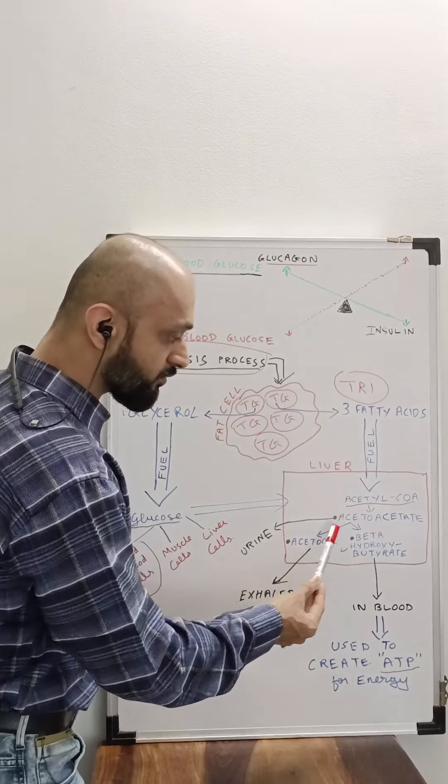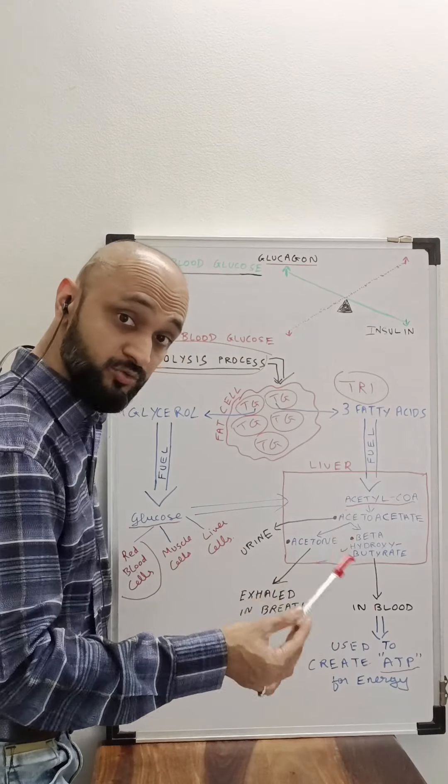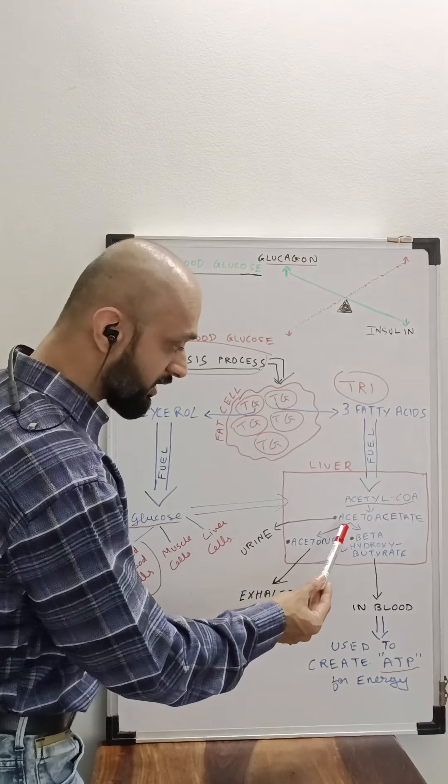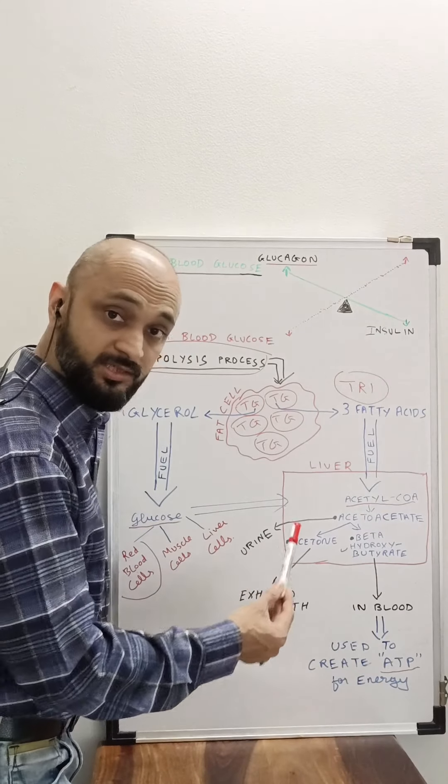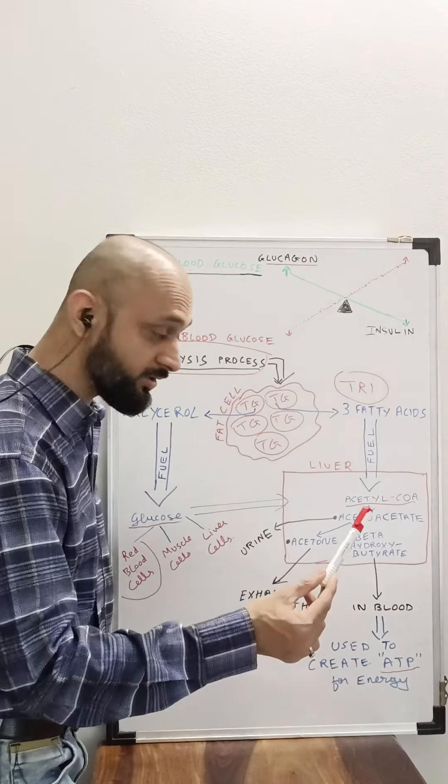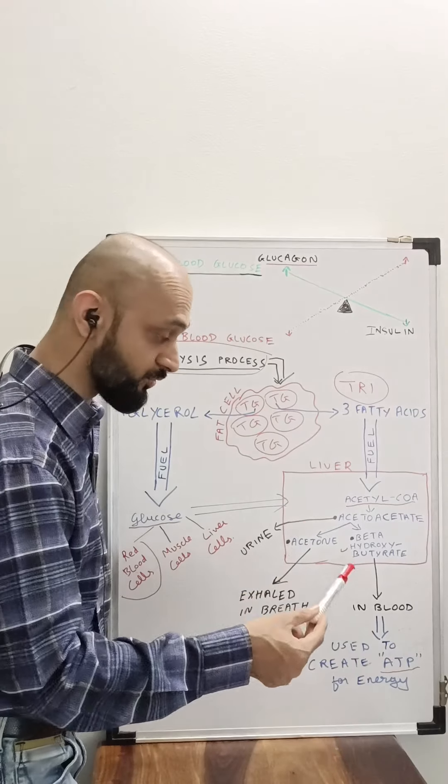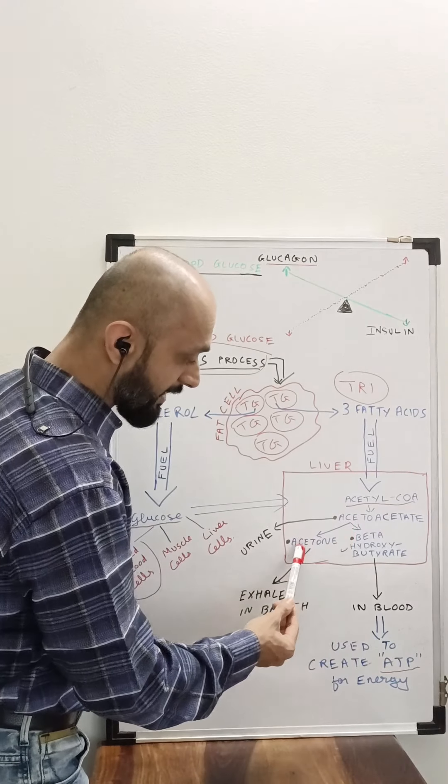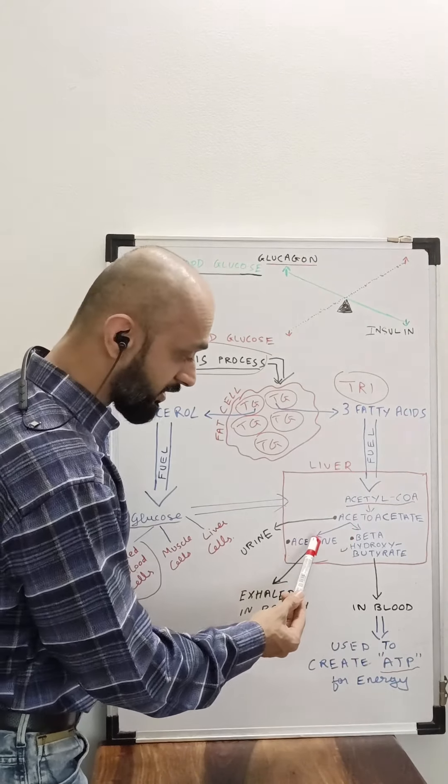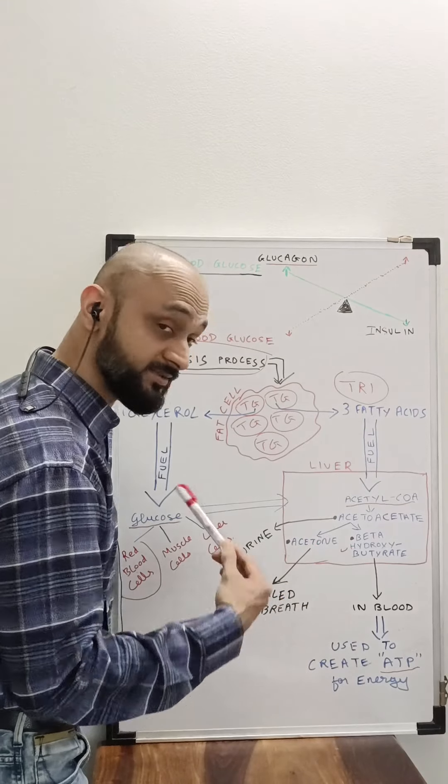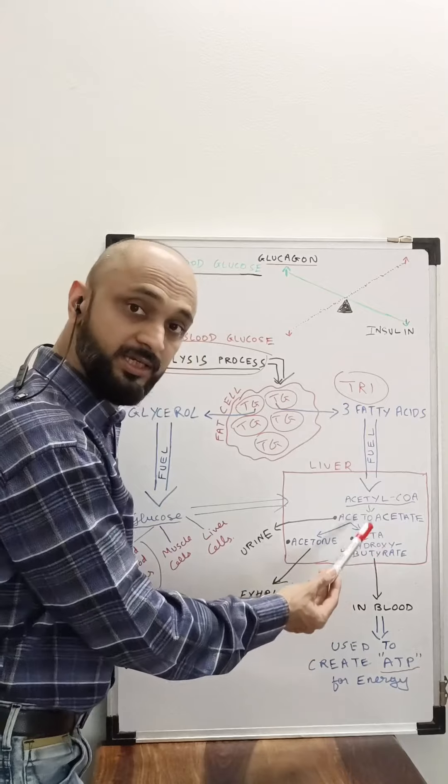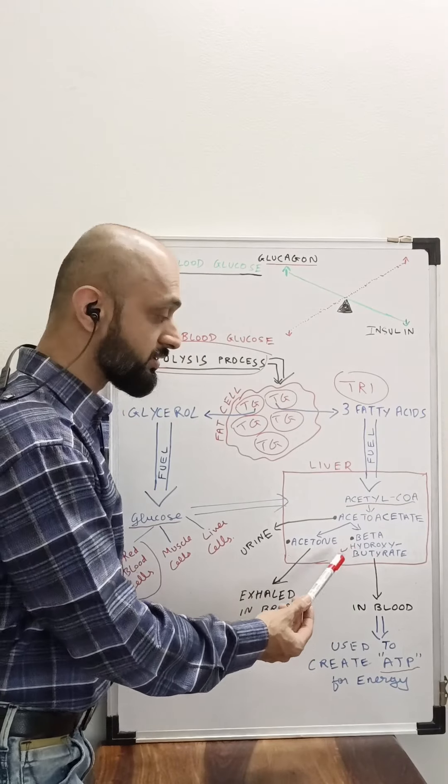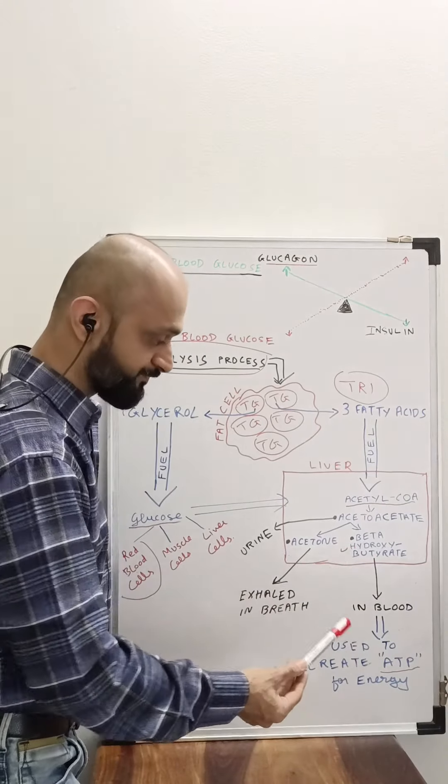These ketone bodies are then used up in different ways. The acetoacetate is released in the urine, it goes out of the body in the form of urine. The acetone is released from the body when you exhale your breath.